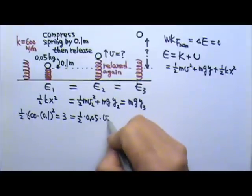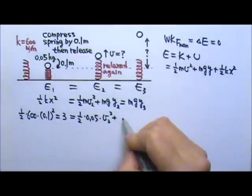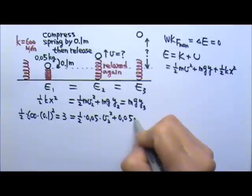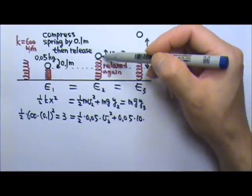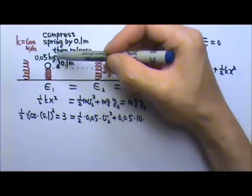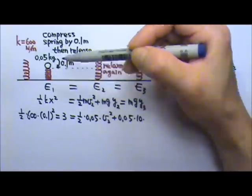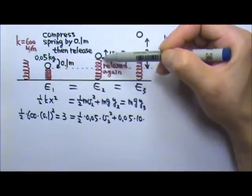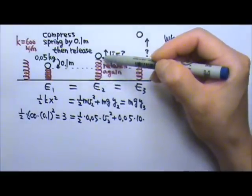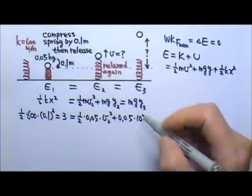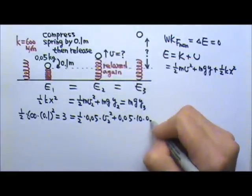The speed we don't know. The mass is 0.05. If I use 10 for g, the y, what is the height above ground? The spring used to be compressed by 0.1. Now it's back to a relaxed spring, so it is up by 0.1 meter. So the y is 0.1.